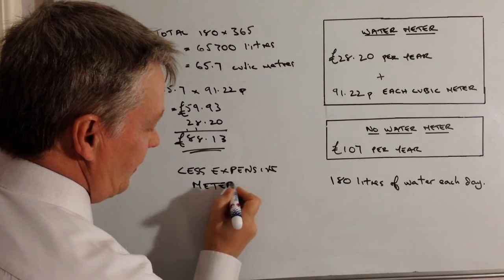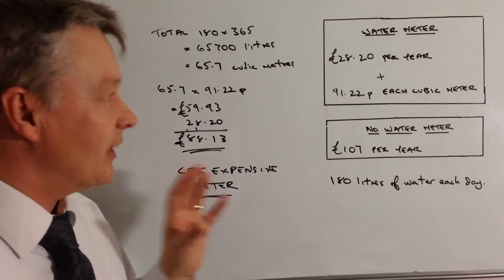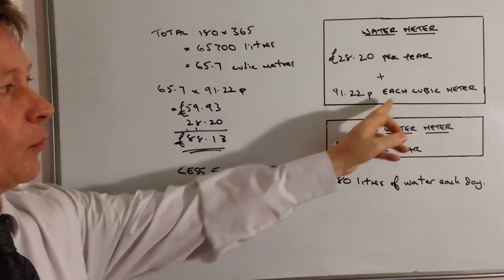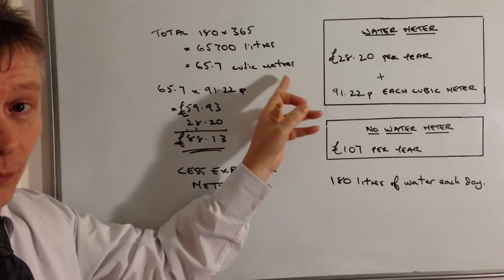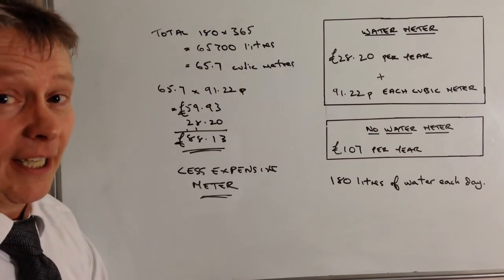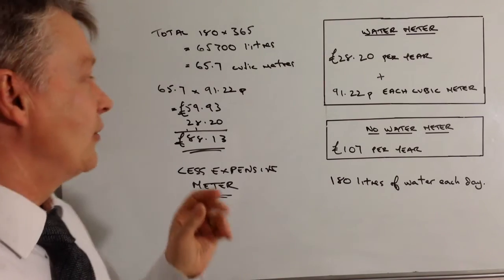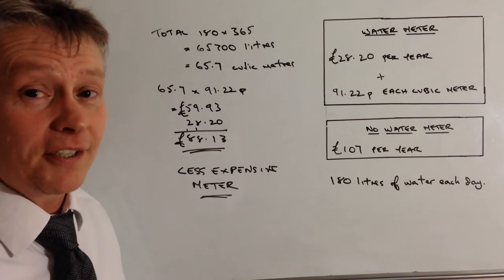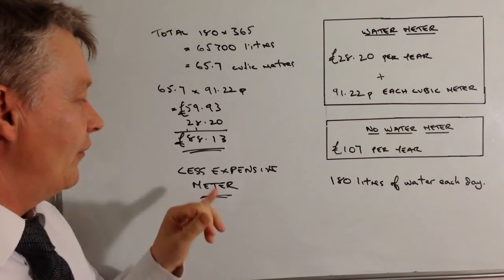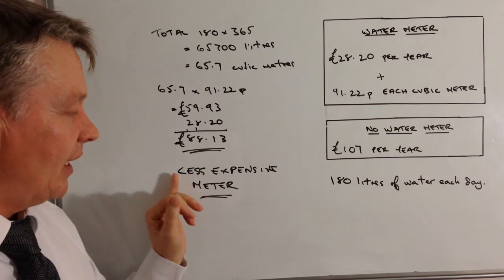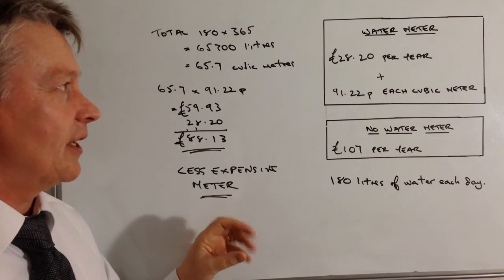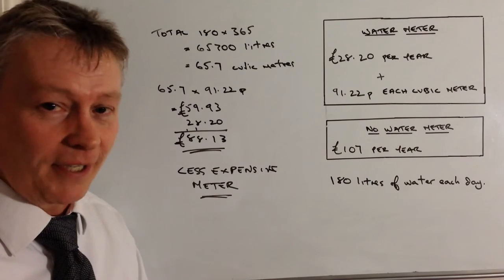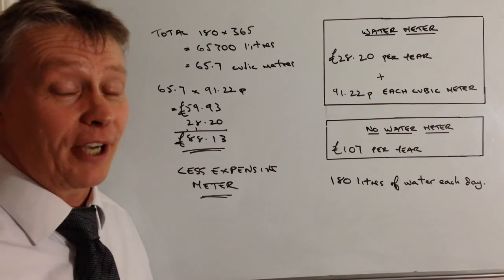Okay, so that would be the answer to this particular question and this would be the kind of thing you need to work through. The key really is you need to remember that you need to work out the cubic metreage of water whereas usually it gives you the information in litres so you need to know that conversion. You also then need to do a little bit of multiplication and generally speaking these are calculator type questions that should be okay for you and then make a statement at the end to say whether it's cheaper or more expensive to use either the water metre or no water metre depending upon the question. I hope that's been okay for you.